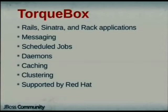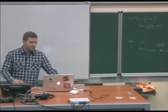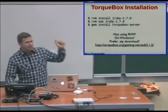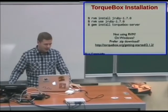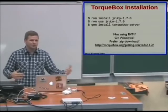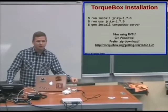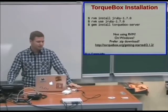TorqueBox is supported by Red Hat, so if it's mission critical, you can call Red Hat. TorqueBox is also easy to install. For Rubyists, the easiest way is the TorqueBox server gem. If you're not using RVM, or you're on Windows, or you prefer a zip download, we have a website: torquebox.org/getting-started. TorqueBox works on Windows, and JRuby helps a lot with Ruby on Windows.